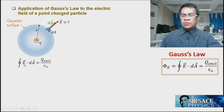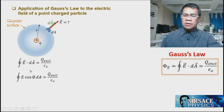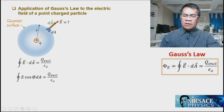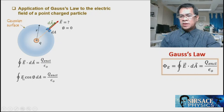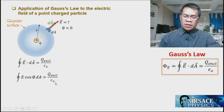Substituting values: E is unknown, but we can use the magnitude. The dot product E·dA becomes E·cos(θ)·dA, where θ is the angle between the two vectors. Since they are parallel, θ = 0, so cos(0) = 1. E can be taken outside the integral since it is constant, and the enclosed charge is q, with ε₀ = 8.854 × 10⁻¹² C²/(N·m²).